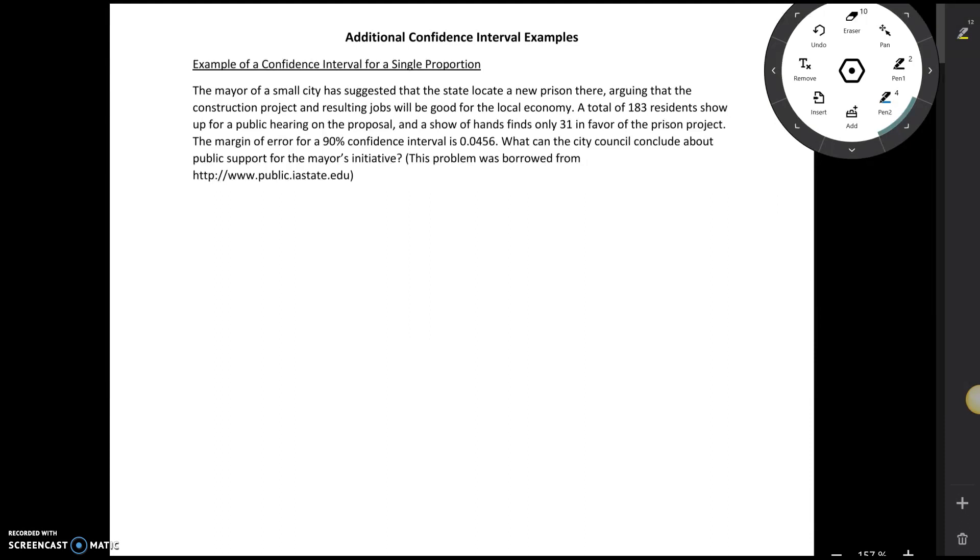For example, the first one here says the mayor of a small city has suggested that the state locate a new prison there, arguing that the construction project and resulting jobs will be good for the local economy. A total of 183 residents show up for a public hearing on the proposal, and a show of hands finds only 31 in favor of the prison project. The margin of error for a 90% confidence interval is 0.0456. What can the city council conclude about public support for the mayor's initiative?